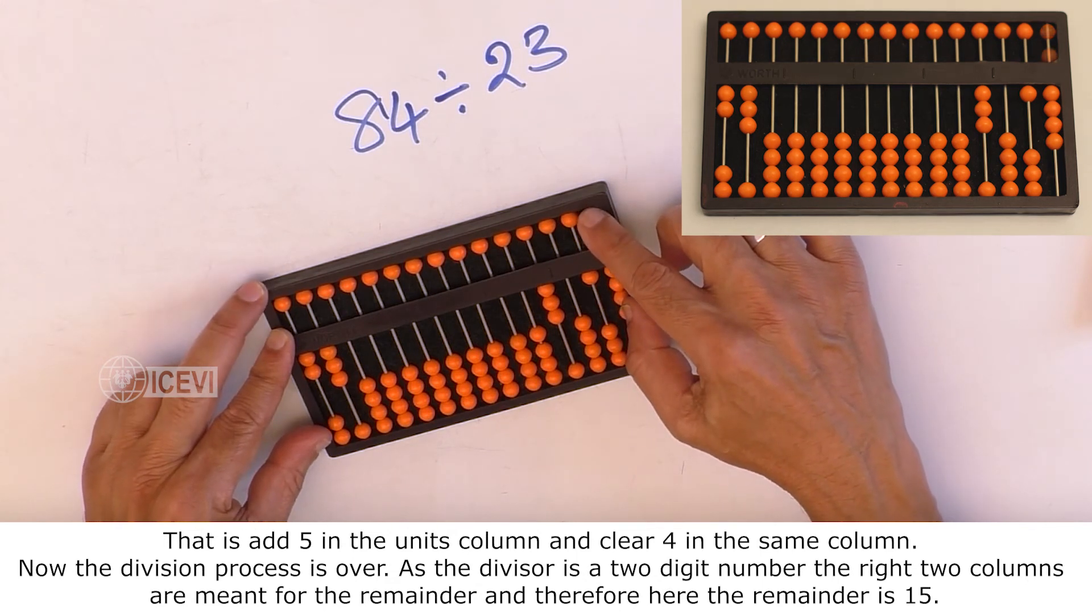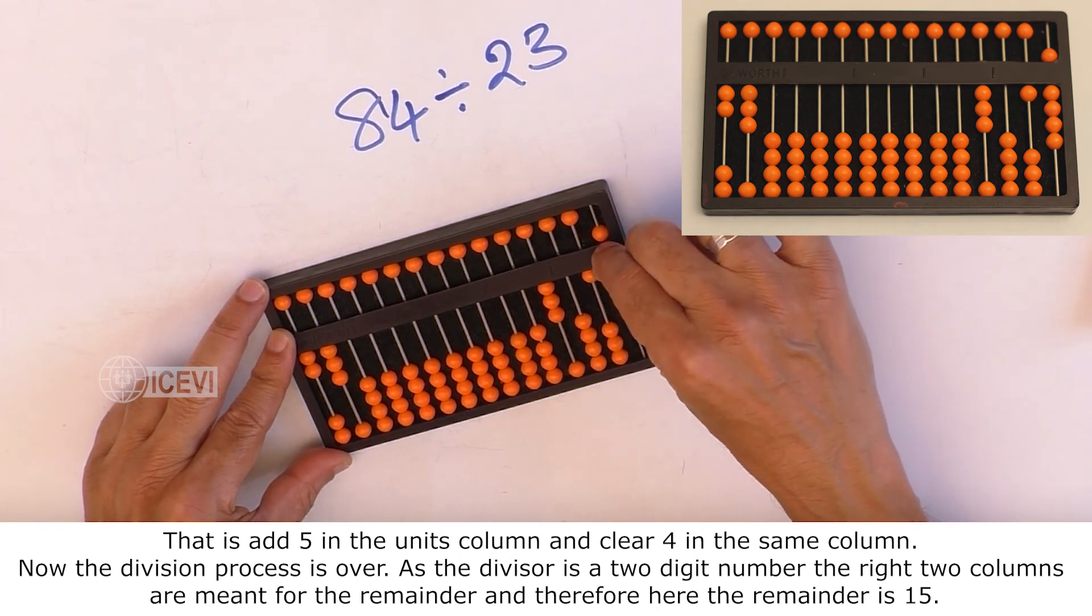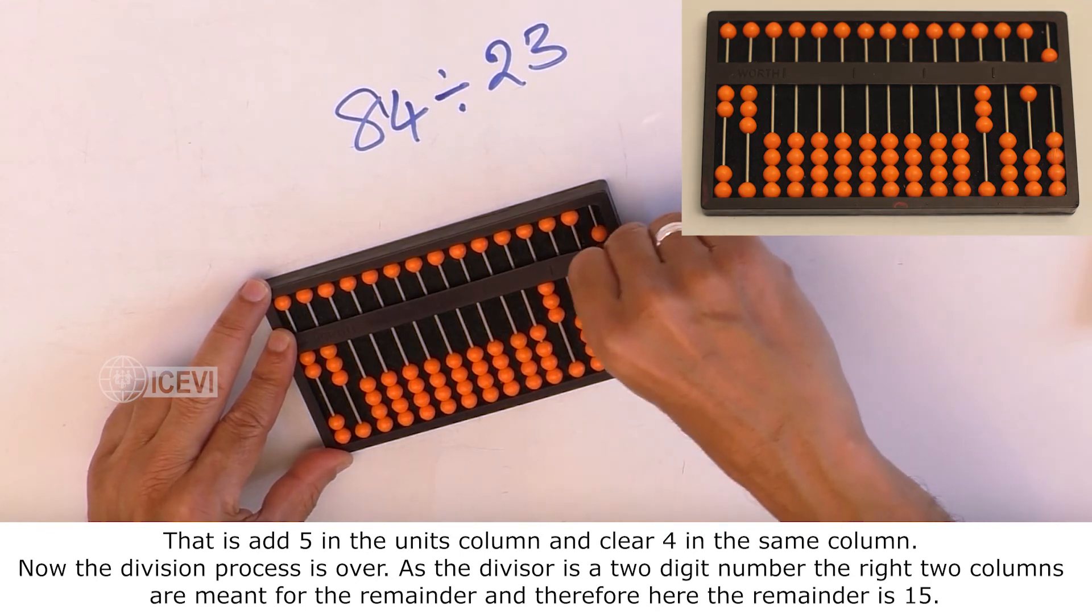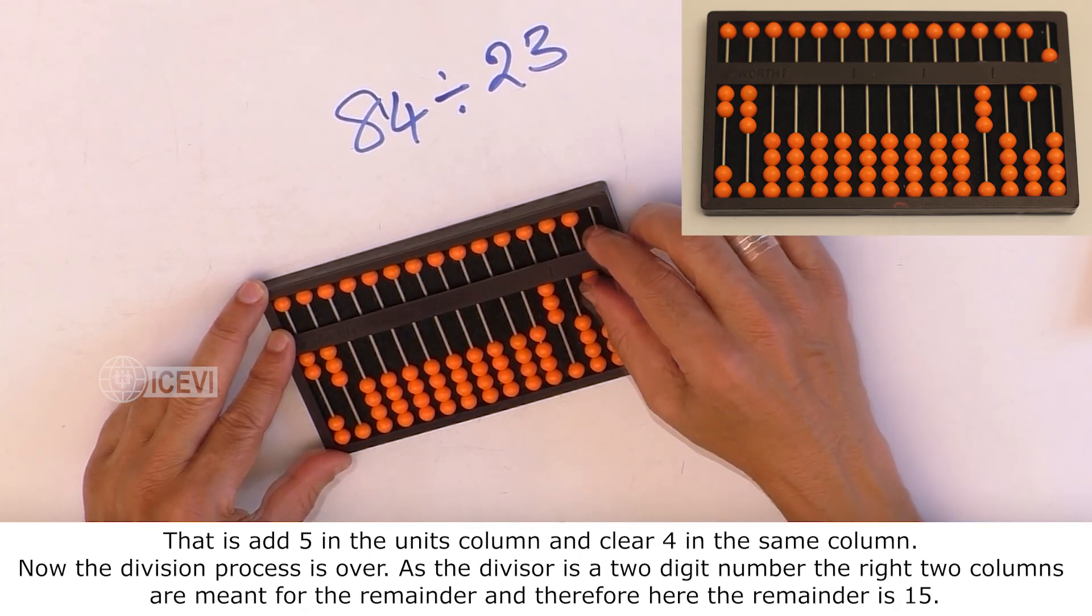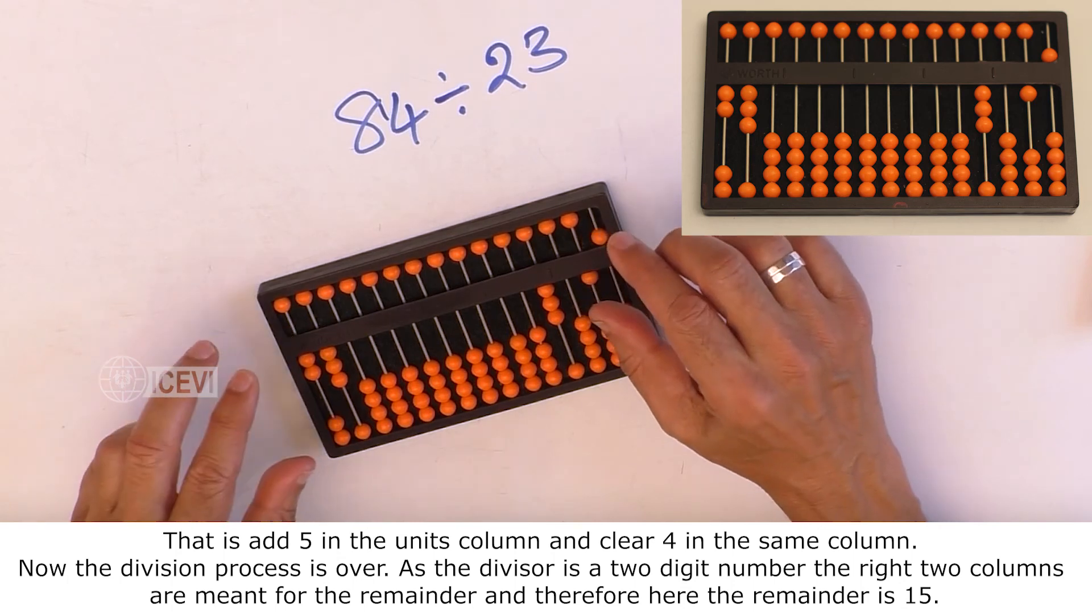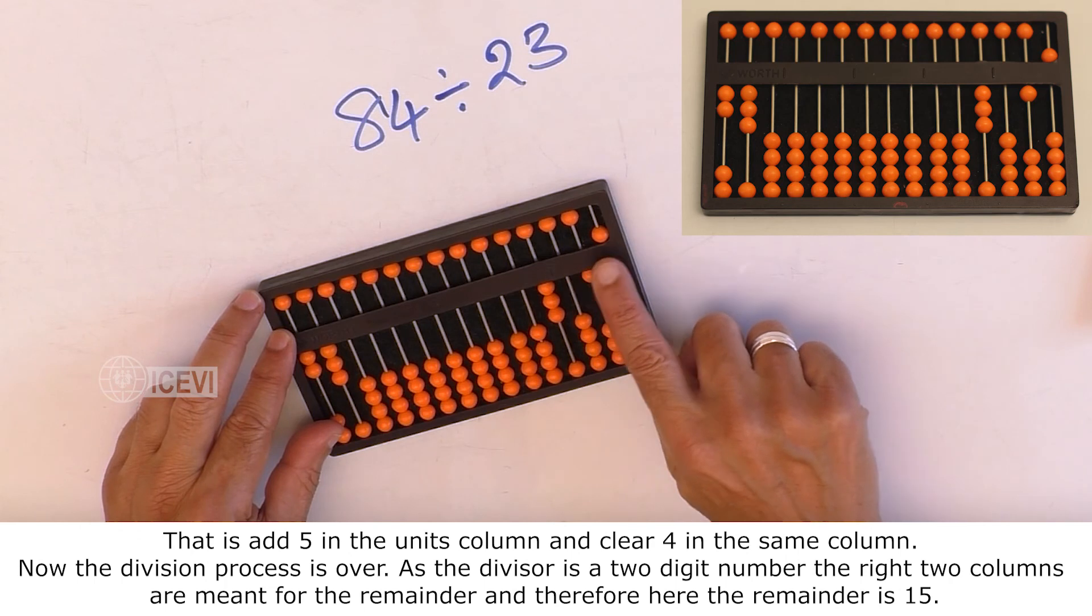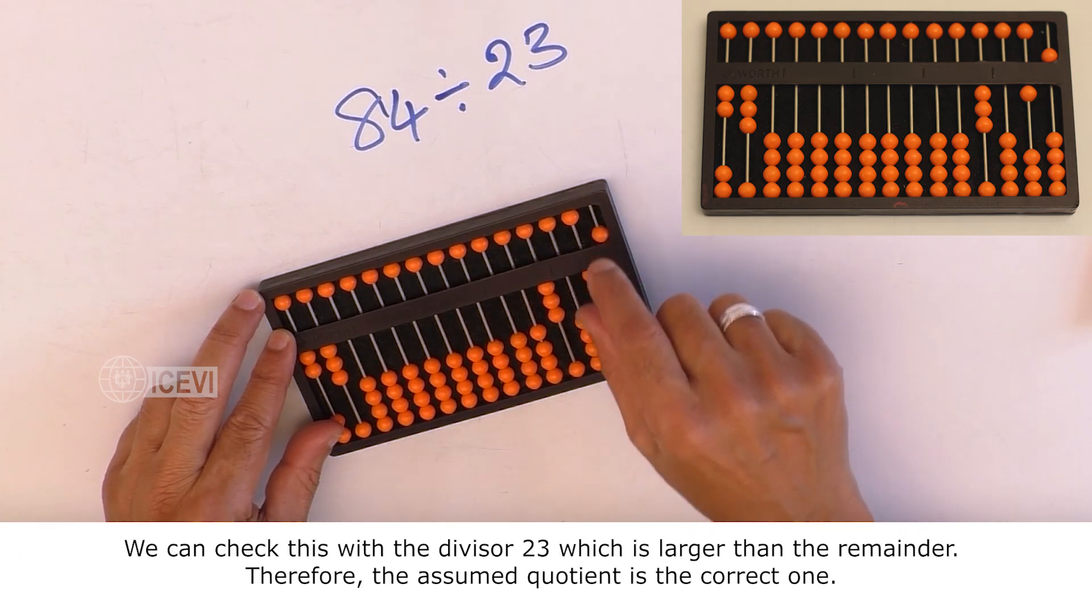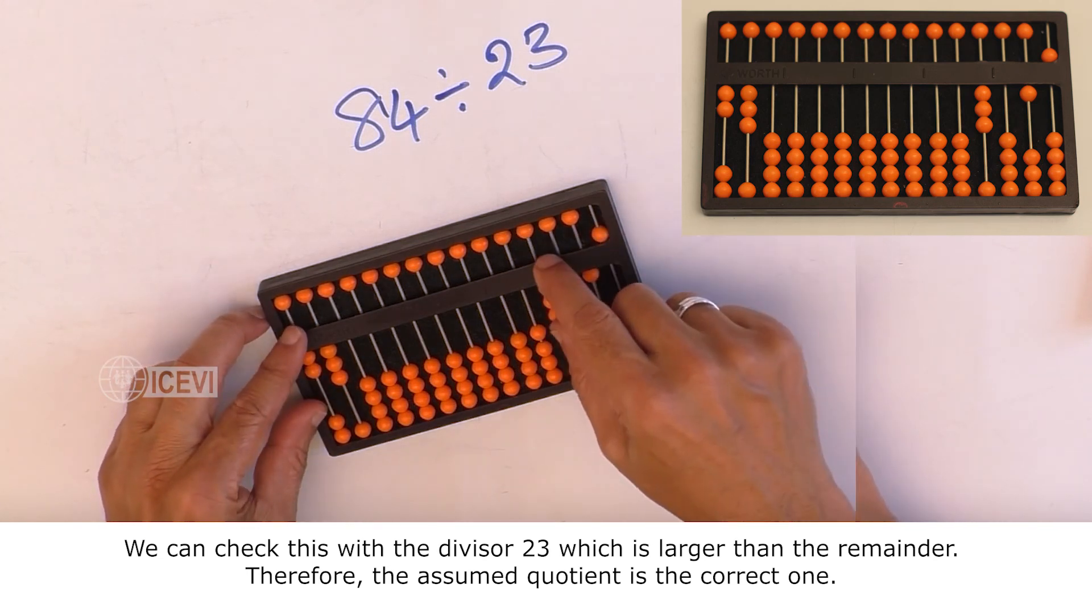Now the division process is over. As the divisor is a 2-digit number, the right 2 columns are meant for the remainder, and therefore here the remainder is 15. We can check this with the divisor 23, which is larger than the remainder. Therefore, the assumed quotient is the correct one.